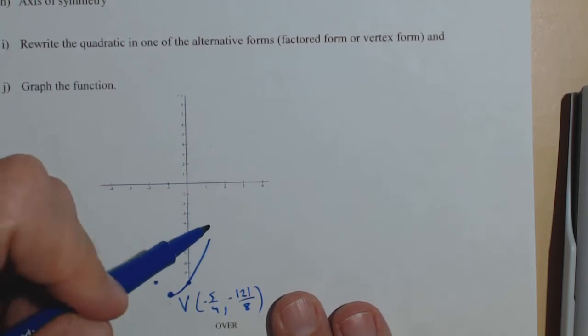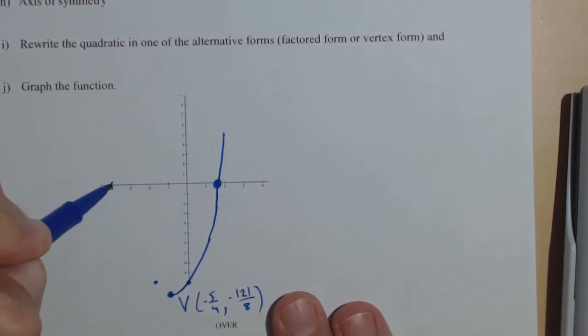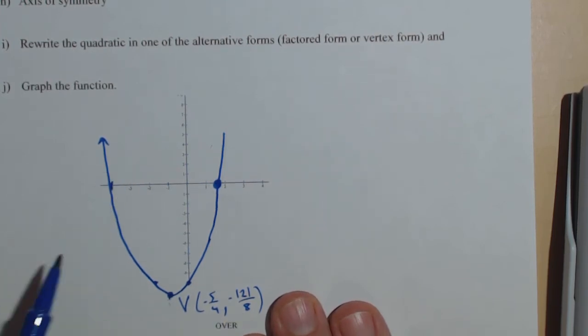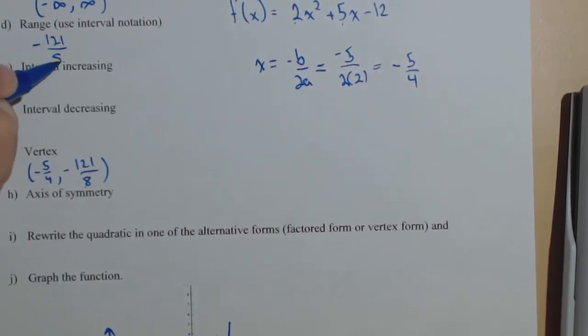And we know we have x-intercepts of negative 4 and 3 halves. So we should hit about right there and right there. Now I'm drawing it first because I want you to see the range. Notice it goes from the vertex up. So it goes from negative 121 over 8 up. So when I go back to fill in my range, I know it goes from negative 121 over 8 to positive infinity.